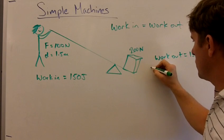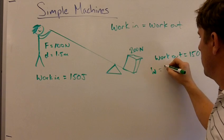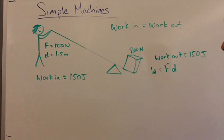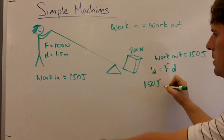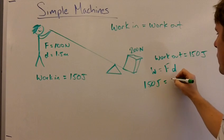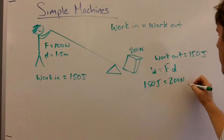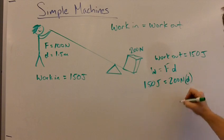So we can figure out how high this box is going to go using the equation work equals force out times distance out. We know the work is going to be 150 joules because that's what it was on that side. We know the force is 200 newtons, so how high will the box go?